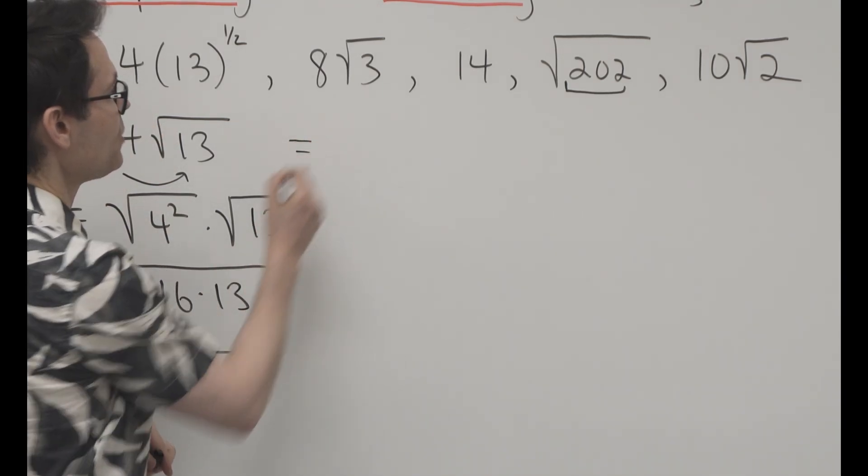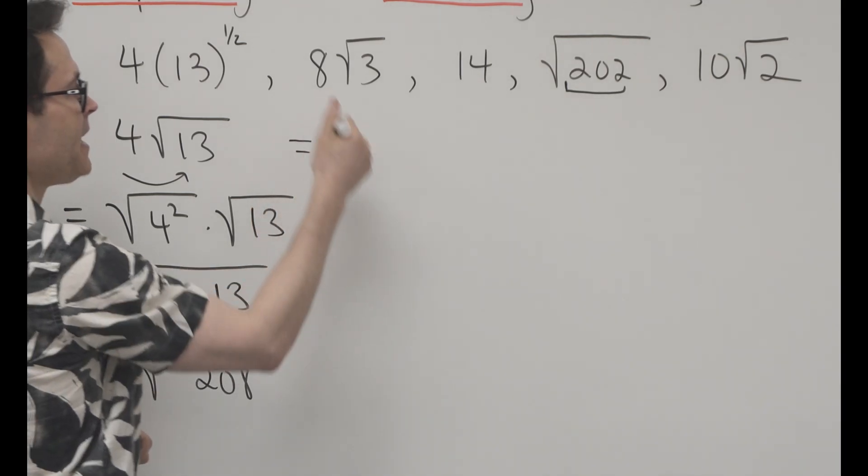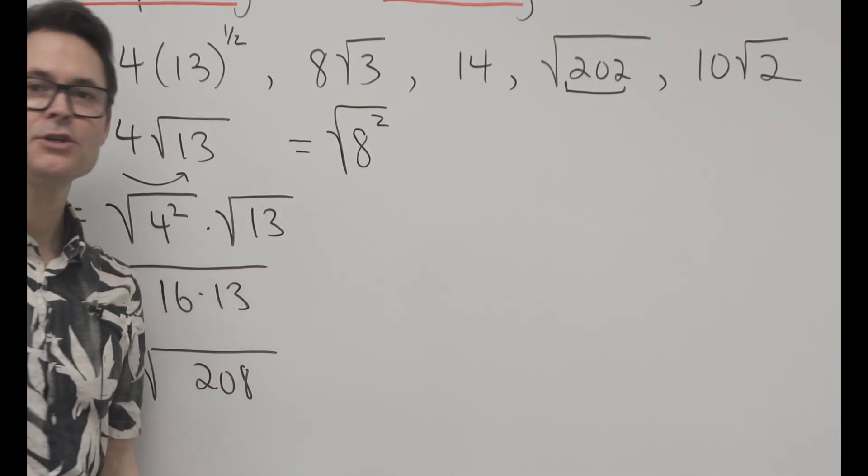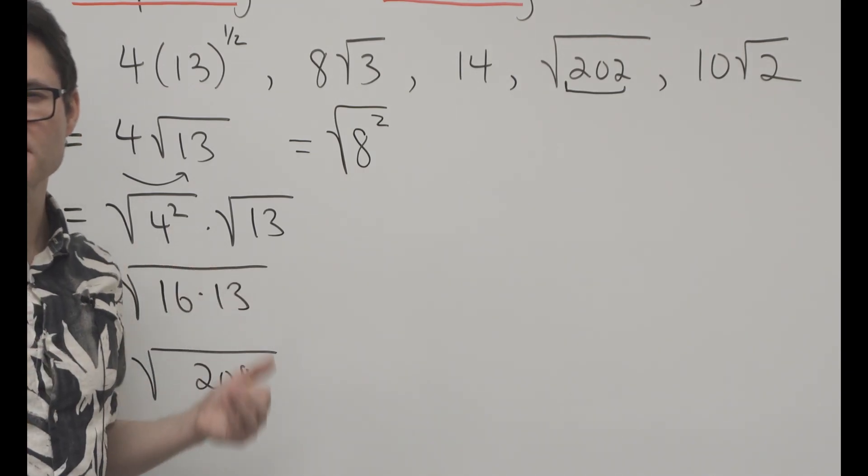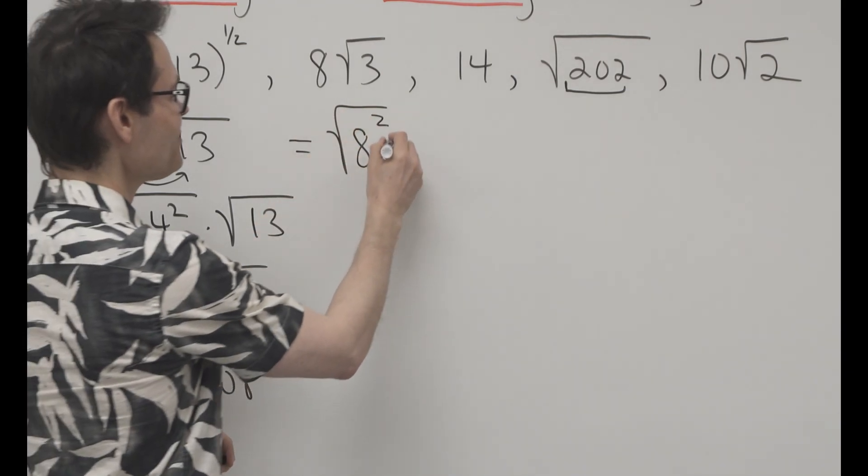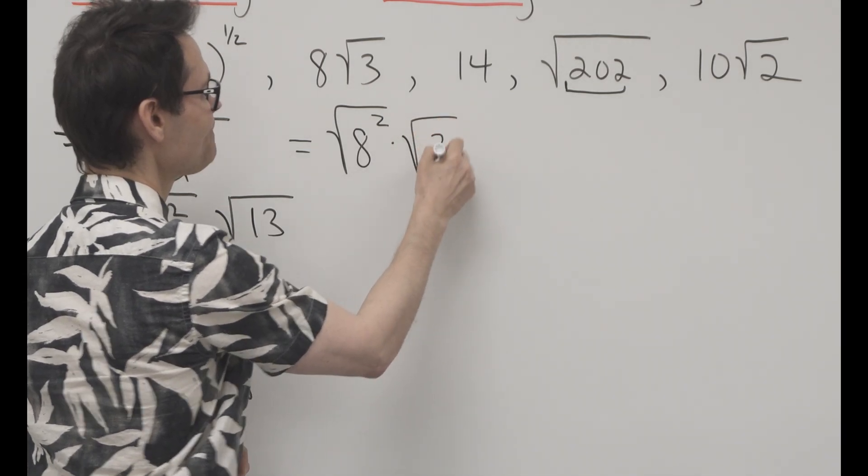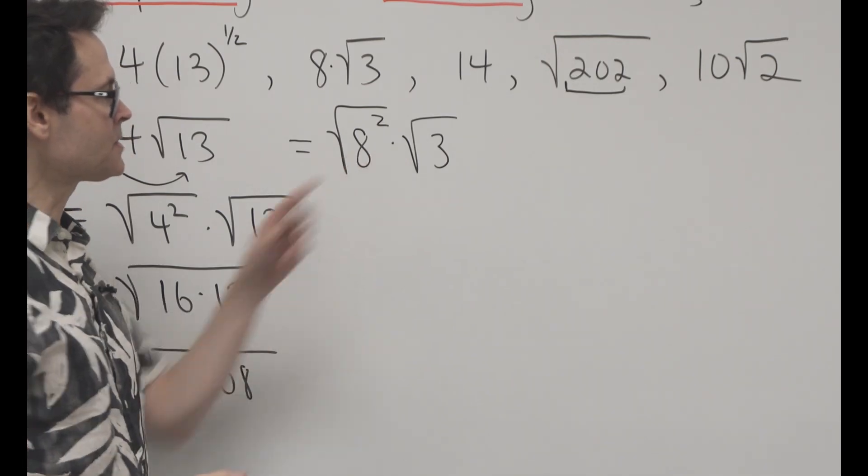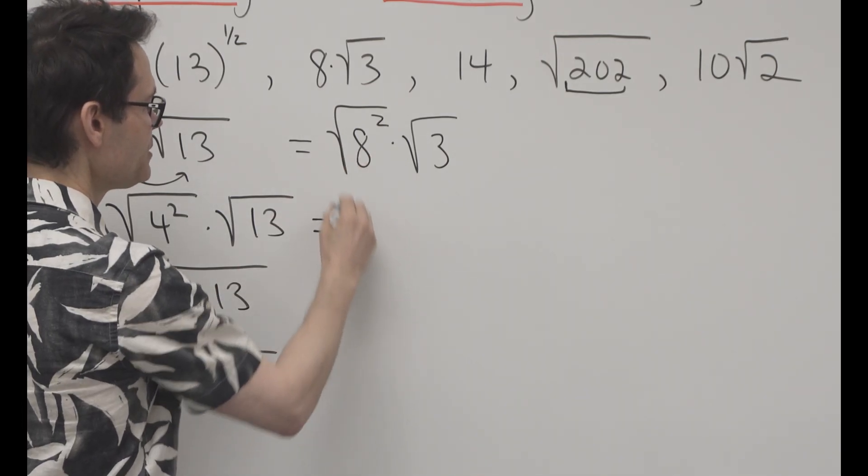Let's go to the next one here. So 8 root 3, take the 8, square it, and then square root it. Because you know that's just 8, sort of dressed up like Halloween, there's its costume. And then the 3 gets its own radical. That's glued together by times, glued together by times.